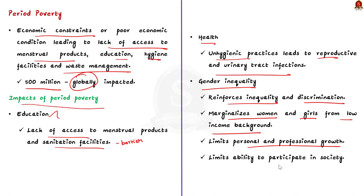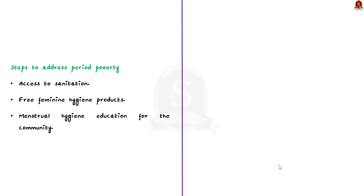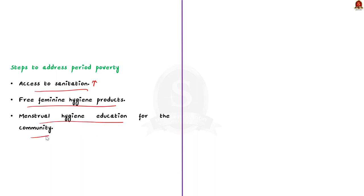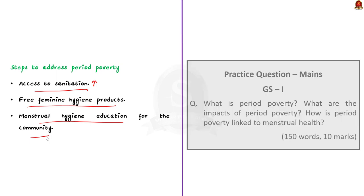Period poverty can be addressed by increasing access to sanitation facilities, providing free menstrual hygiene products, and educating communities about menstrual hygiene. These steps will go a long way in addressing period poverty.